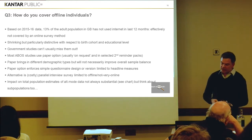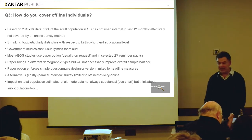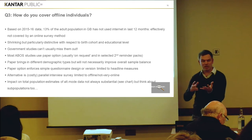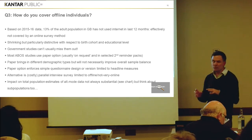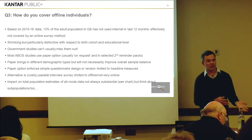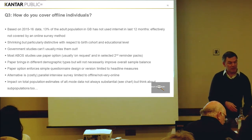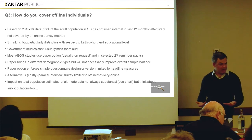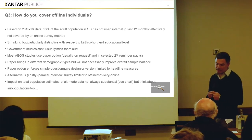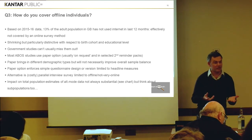Most ABOS studies use a paper option as the alternative, which is usually available on request right from the first letter. It will tell you how you can get hold of one. But it's also used in reminder packs, usually in the second and final reminder. Usually we don't include paper questionnaires in every one of the second reminders — we tend to apply it selectively so that certain strata that don't respond as well online as others tend to get the paper questionnaires in the reminder packs, whereas more affluent areas generally don't.